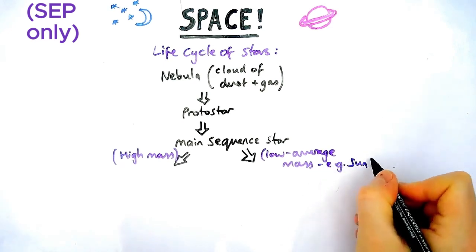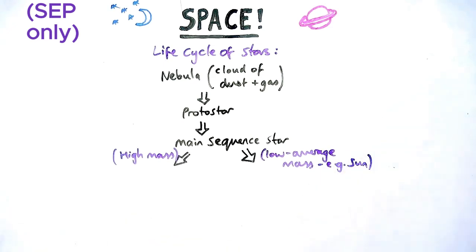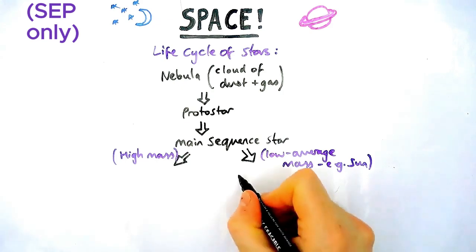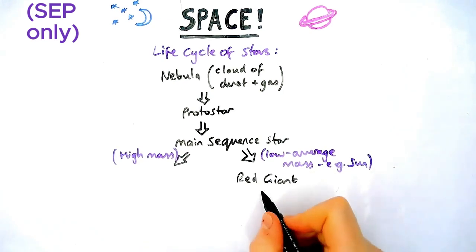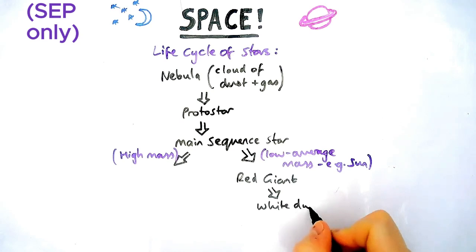So let's do our Sun first of all. So the low to average mass, after it's been a main sequence star, will become a red giant star. Then it will become a white dwarf star. And as you might be able to guess, red giant is bigger, white dwarf is very small. And after all the radiation is emitted from a white dwarf, it becomes a black dwarf.